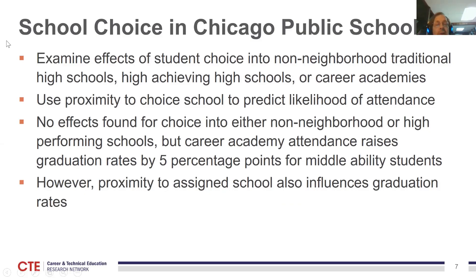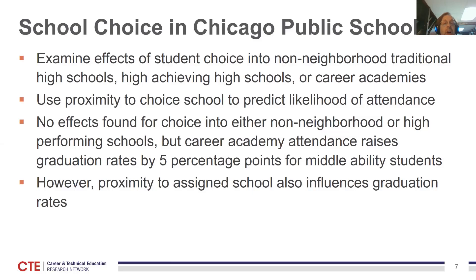Next is the Chicago Public Schools instrumental variable study. The idea is that students who live close to a school are more likely to choose it, so being close to a career academy means you're more likely to attend one. They didn't find effects for attending non-neighborhood schools or high-performing schools, but they did find effects for career academies — if you were closer to a career academy, graduation rates were higher, equating to career academy attendance raising high school graduation rates by about five percentage points.